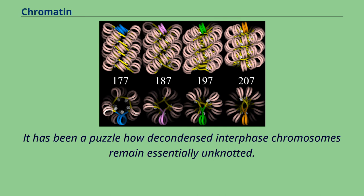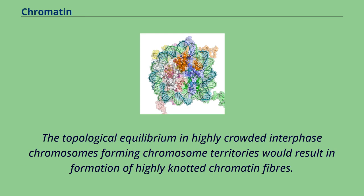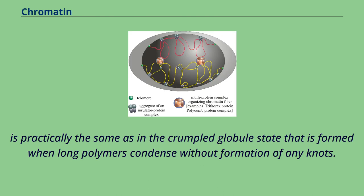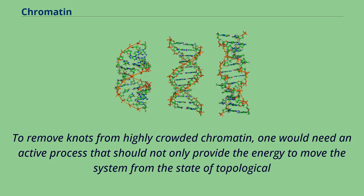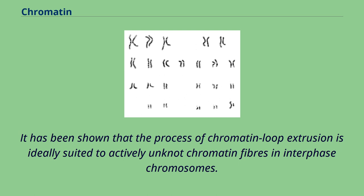It has been a puzzle how decondensed interphase chromosomes remain essentially unknotted. In the presence of type II DNA topoisomerases that permit passages of double-stranded DNA regions through each other, all chromosomes should reach the state of topological equilibrium. Topological equilibrium in highly crowded interphase chromosomes forming chromosome territories would result in formation of highly knotted chromatin fibers. However, chromosome conformation capture methods revealed that the decay of contacts with the genomic distance in interphase chromosomes is practically the same as in the crumpled globule state, formed when long polymers condense without formation of any knots. It has been shown that the process of chromatin loop extrusion is ideally suited to actively unknot chromatin fibers in interphase chromosomes.